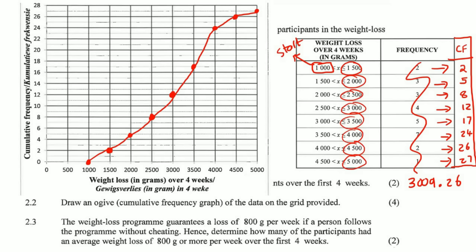The weight loss program guarantees 800 grams per week. Determine how many participants had an average weight loss of 800 grams or more per week over the first four weeks. Over four weeks that's 800 × 4 = 3200 grams. So we need to find how many people lost 3200 grams or more.